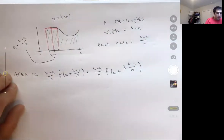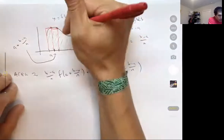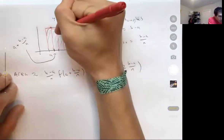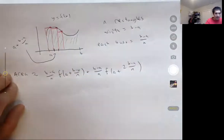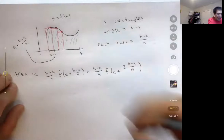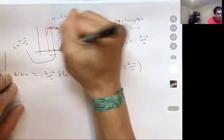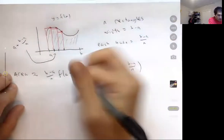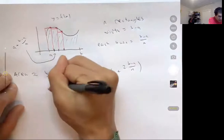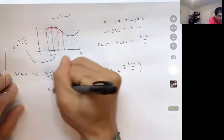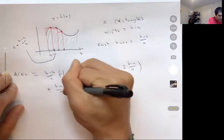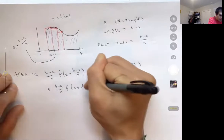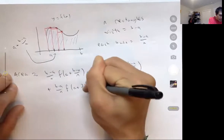For the third rectangle, similarly, the x value is a plus three times b minus a over n. So its area is base times height: (b minus a over n) times f of (a plus 3 times b minus a over n).